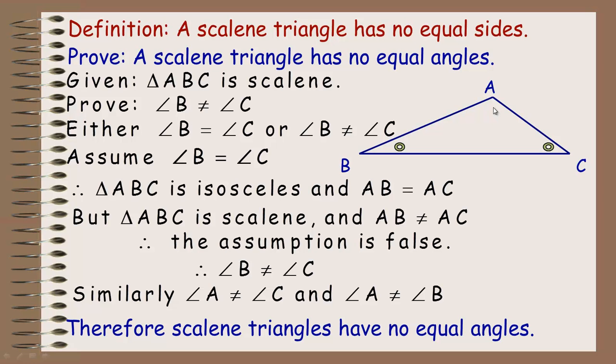That's the idea in an indirect proof: assume the opposite of what you want to prove true, show your assumption leads to a contradiction, and then the opposite is true. And that's the end of the tutorial.